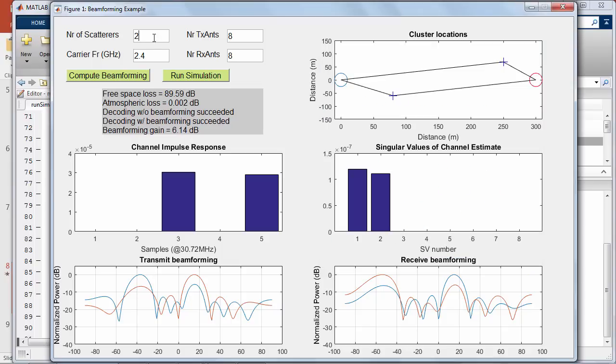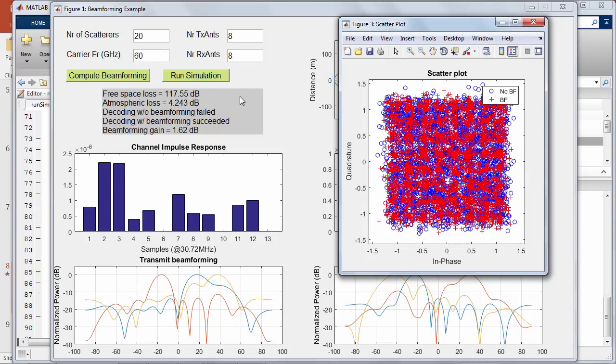Let's switch to a rich channel with 20 scatterers and a 60 GHz carrier frequency. Now the free space loss has increased a lot,